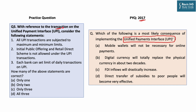The question says: with reference to transactions on the Unified Payment Interface, consider the following statements. Statement 1: all UPI transactions are subject to maximum and minimum limits. This statement is partially correct and partially incorrect. All transactions are subject to a maximum limit but not a minimum limit — you can send even 1 paisa. There is no minimum limit for UPI transactions, but the maximum limit is 1 lakh, 2 lakh, or 5 lakh in different categories. Hence this statement is incorrect.